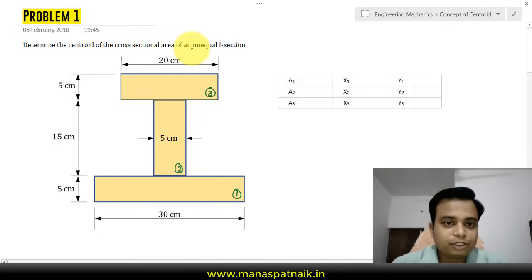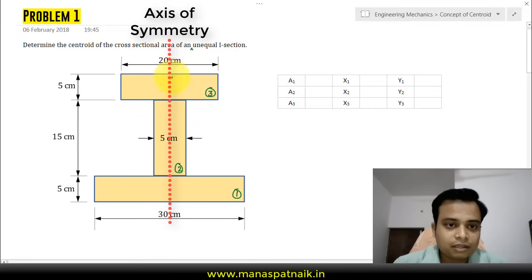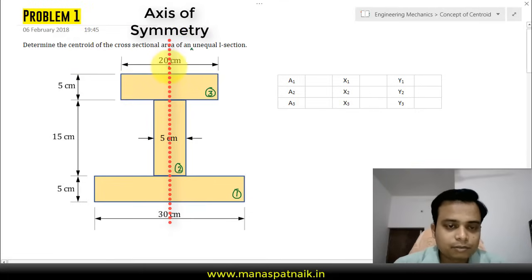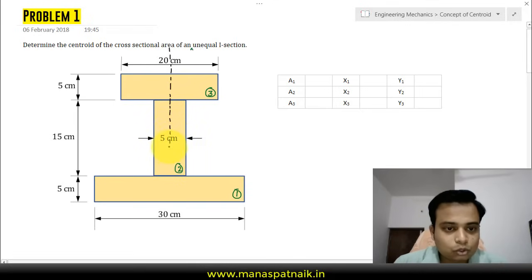Now first of all, I forgot to mention this: this I section is symmetrical about this axis over here. If I can make an axis over here, maybe with a black color, that will be better, something like this. It's symmetrical about this y axis, this vertical axis.